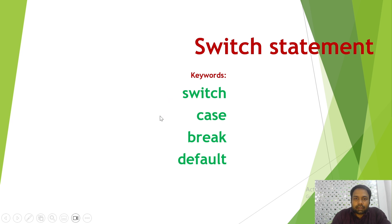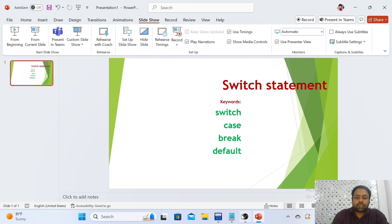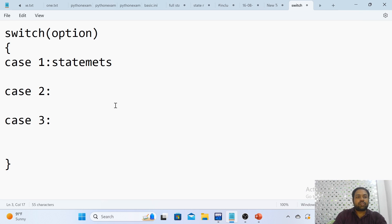There are totally four keywords used in switch. The first one is switch itself, next case, break, and default. These are the four keywords we are going to use. I will show you how the syntax looks — the very first thing is the switch keyword.